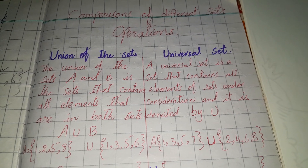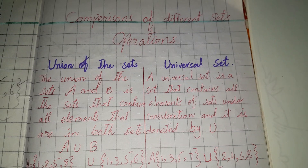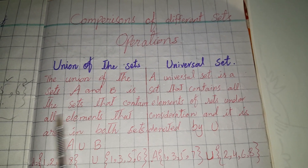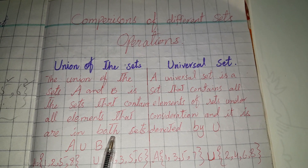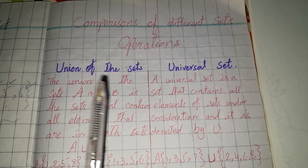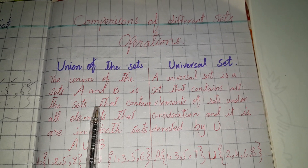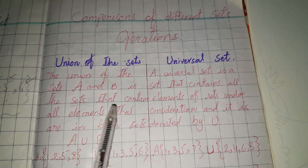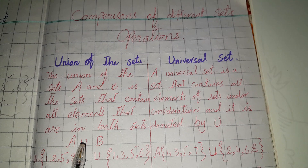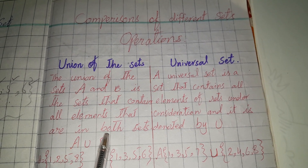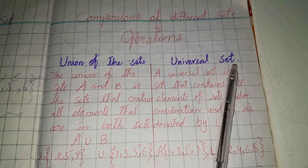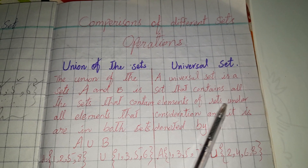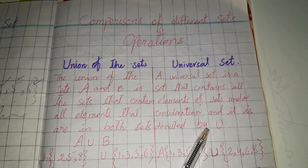Let's start today's lecture. What is the union of a set? The union of sets A and B is the set that contains all elements that are in both sets A and B. It is denoted by U.